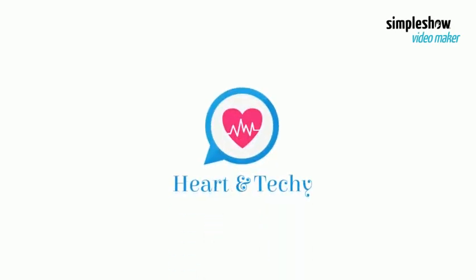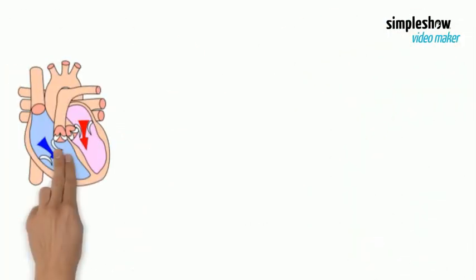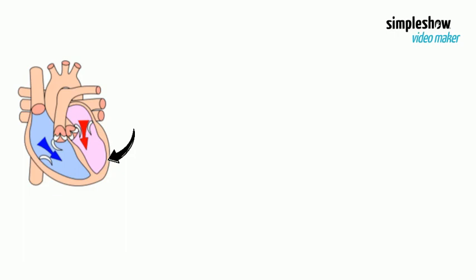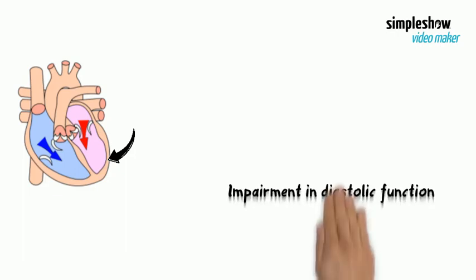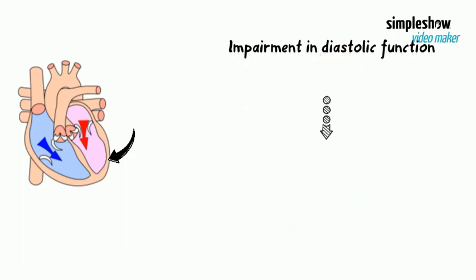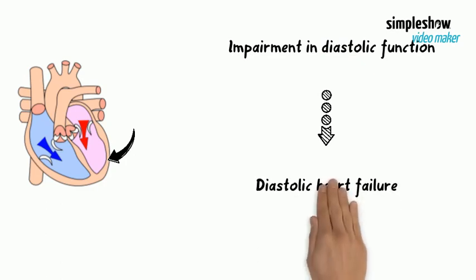Welcome to the Heart and Techie Diastology Series: Diastolic Function Assessment in Echocardiography, Part 1. Diastolic function is defined as the filling of the heart during diastole; it represents the relaxation of the ventricle. Diastole starts immediately after systole. Impairment in diastolic function may lead to diastolic heart failure. In this video, we will teach you about diastology and the components of diastolic function.